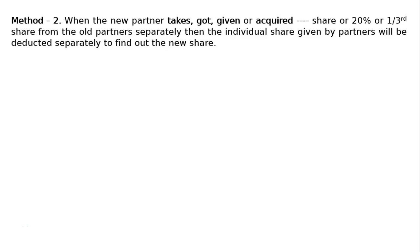This is Method 2. When the new partner gets, is given, or acquires a share of 20% or one-third from the old partners separately, then the individual share given by partners will be deducted separately to find out the new share.